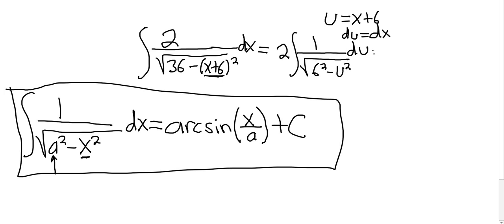So now we can just directly apply the formula. So the 2 hangs out, and we get the arc sine. And it would be, well, here it's x over a. So our a is 6 in this problem. And instead of x, it's u. So it's u over 6. And then we have the plus and the capital C.